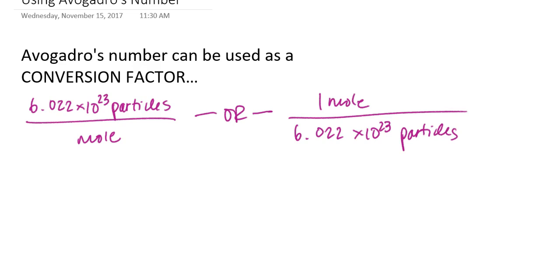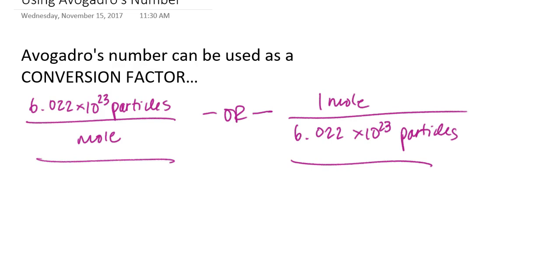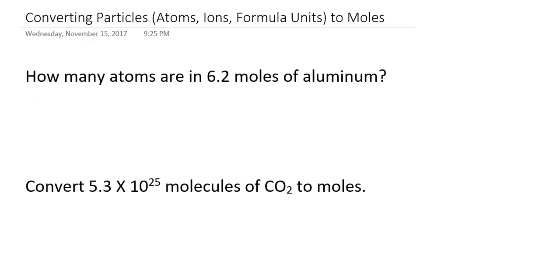The conversion factor I use — either the one on the left or the one on the right — will depend on how the problem is set up in terms of the given information and how the units work out as I'm trying to get to the proper units for my answer. To illustrate that, I have a couple of examples on the next slide.